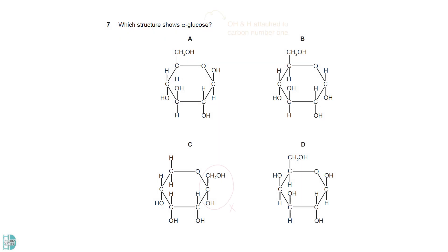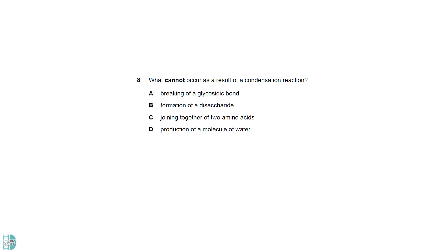Alpha glucose has an OH group and a hydrogen attached to carbon number 1. The OH group is below the plane.